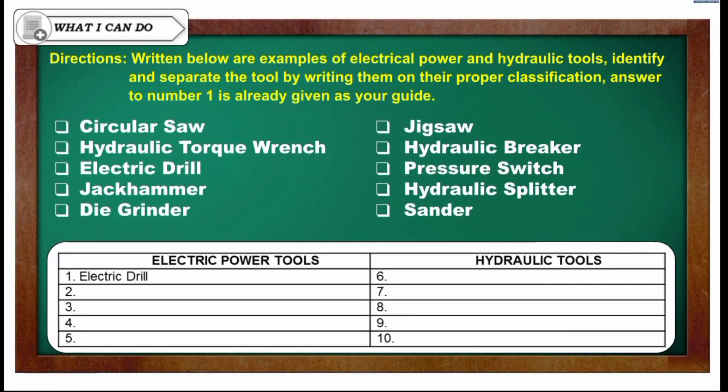For the next activity, 'What I Can Do,' we are going to identify the given tools and classify them as either electric power tools or hydraulic tools. For example, number one is already given — electric drill. Place all electrical power tools in the left column, and all hydraulic tools in the right column, numbers 6 to 10. We will check it tomorrow in our follow-up discussion.